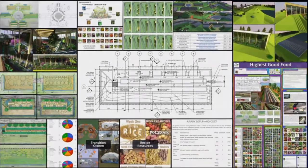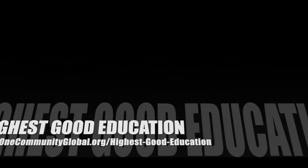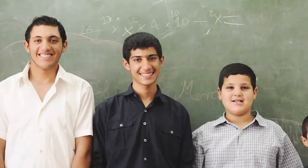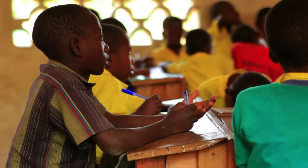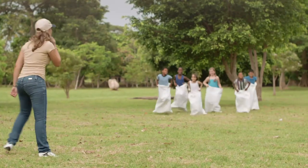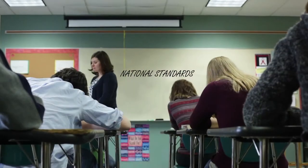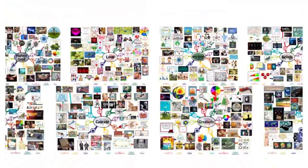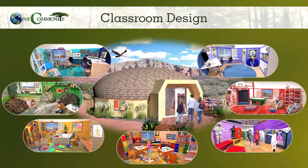The next component is highest good education. This component is complete and pretty much ready to launch once we're on the property. One Community's approach to highest good education is designed for all age groups, adaptable to any schooling environment, inspiring and fun for all participants. It includes national standards, all subjects, lesson plans, teaching strategies, learning strategies and tools, classroom design, and more.